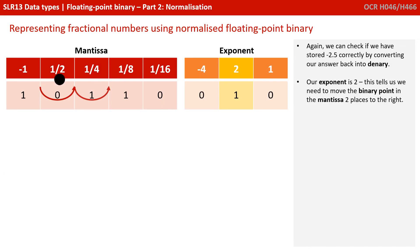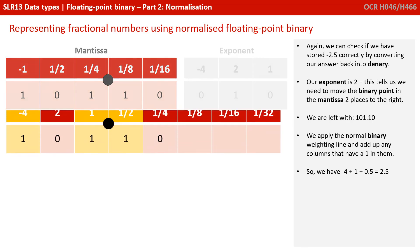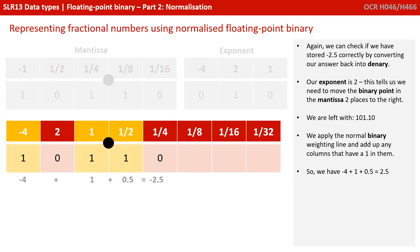We can check if we've stored minus 2.5 correctly. Our exponent was 2, telling us we need to move the binary point of the mantissa two places to the right. We're left with 101.10. Apply our normal binary weighting line, add up columns with ones: minus four plus a one plus a half, which is minus 2.5.